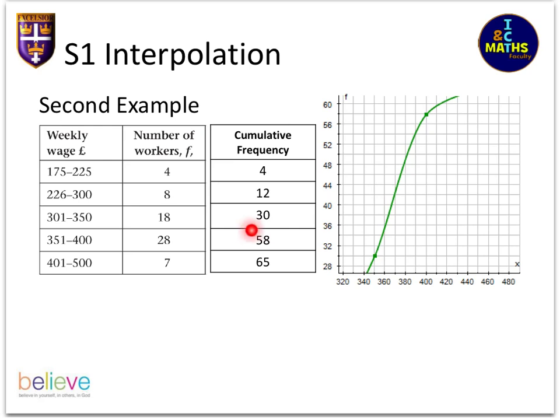And the median value would be in this group here, because up to there, I've only looked at 30 items, and by the time I get to the end of that group, I'd look at 58. So the 32.5th value, if it ever existed, would be in there.